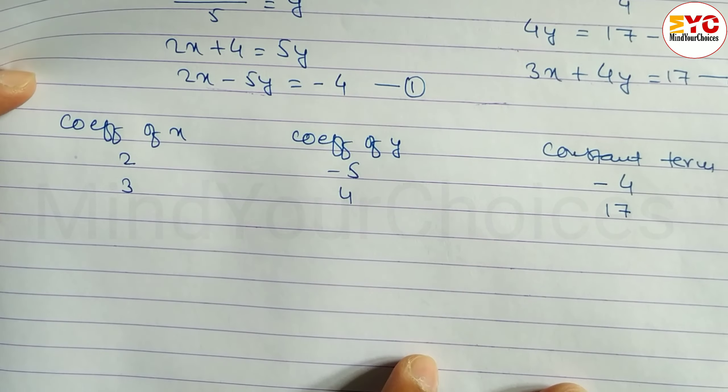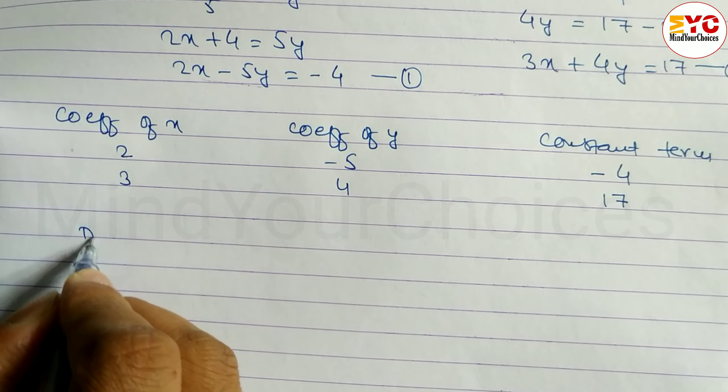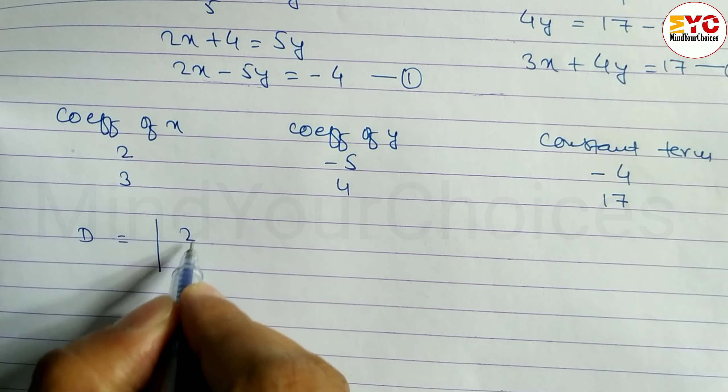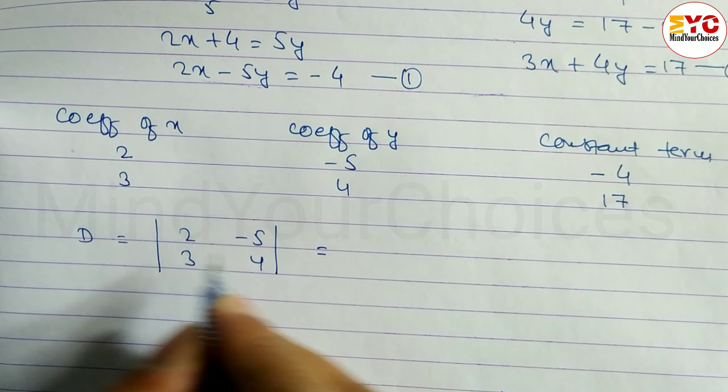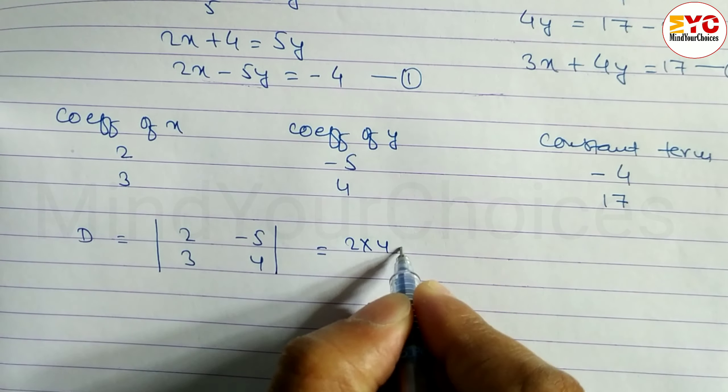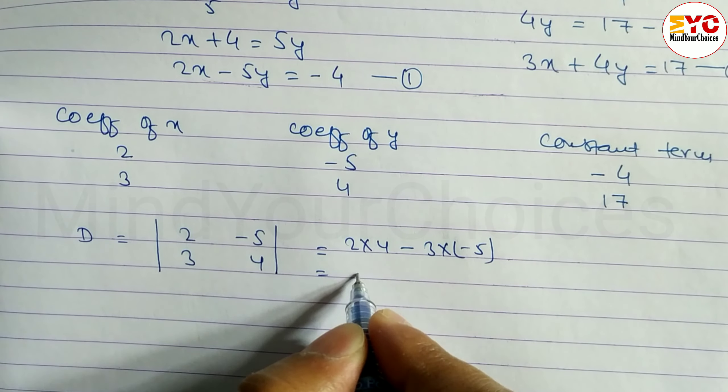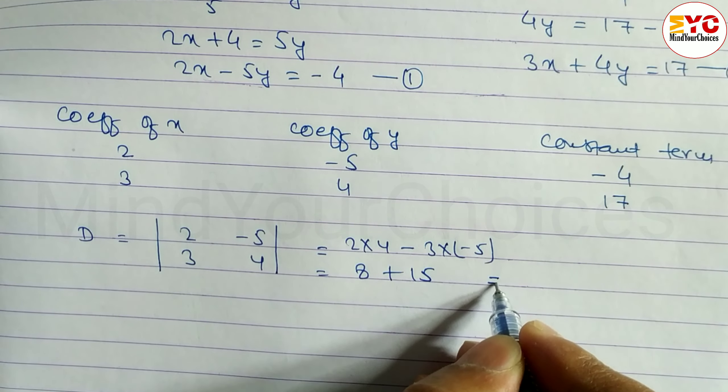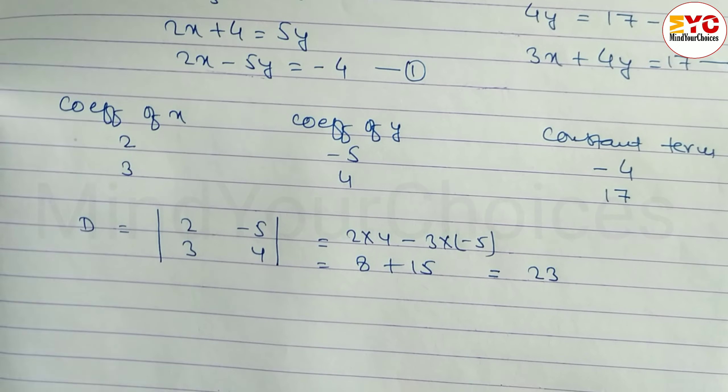Now we have to find out the determinants D, D1, and D2. D is found using coefficient of x and coefficient of y: 2, 3, minus 5, 4. Calculate: 2 into 4 minus 3 into minus 5. 2 into 4 is 8, minus times minus is plus, 3 into 5 is 15. Add them: 23. So write here 23.